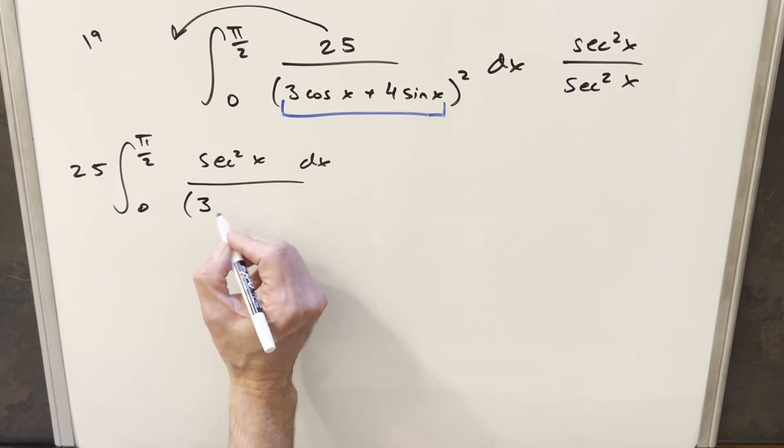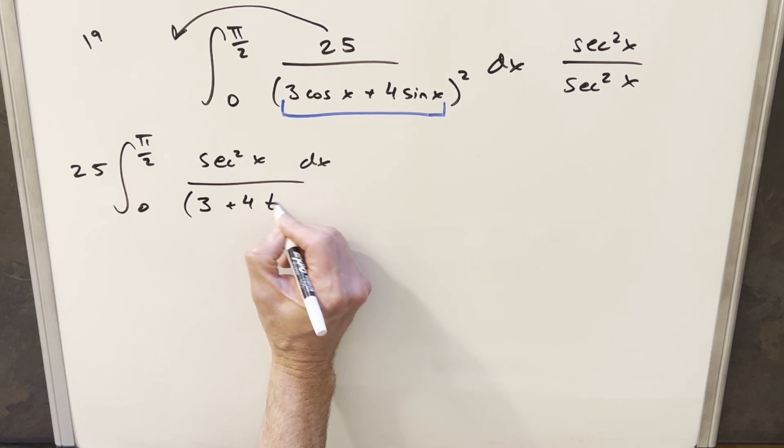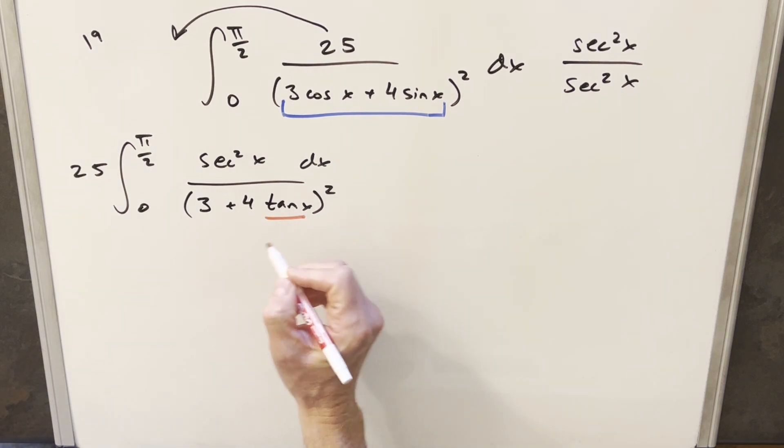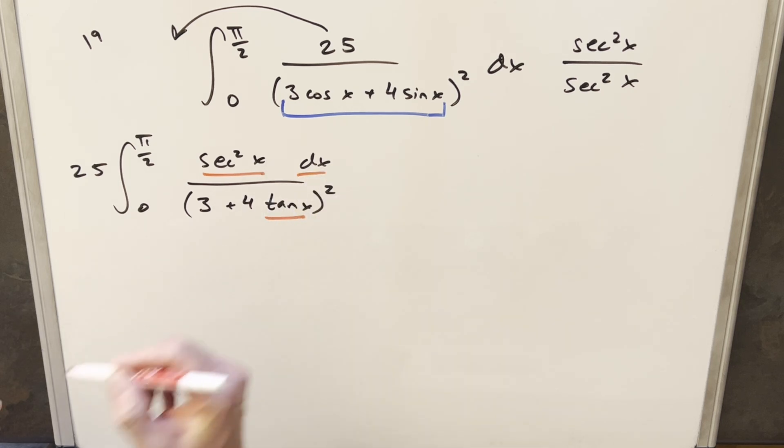And then for this term it's going to become plus 4 sine over cosine x, or I can write this as tan x, and this is all squared. But then because we have a tangent here, the derivative of tangent secant squared dx in the numerator, so we're in good position to do a u substitution.